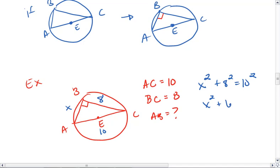X squared plus 64 equals 100. X squared equals 36, so X equals 6. And to be more precise, we could say X equals plus or minus 6, but since it's a length, we say positive 6.